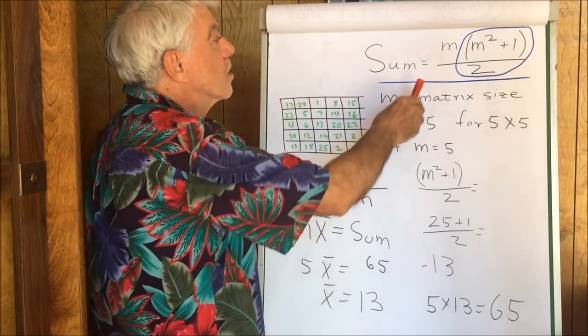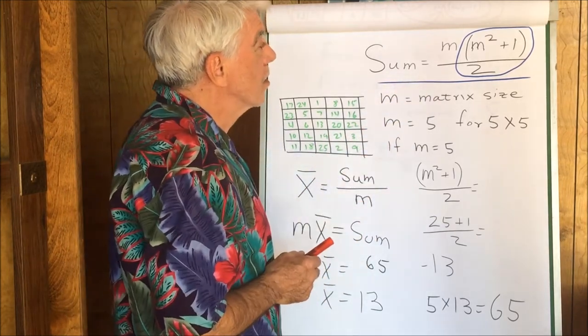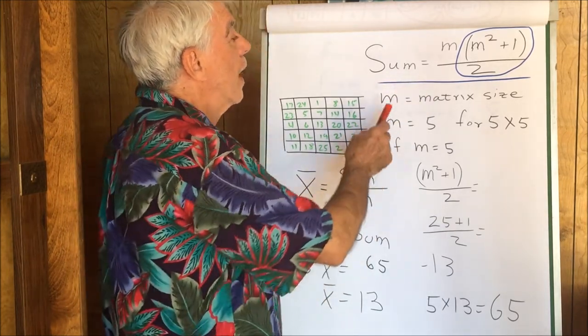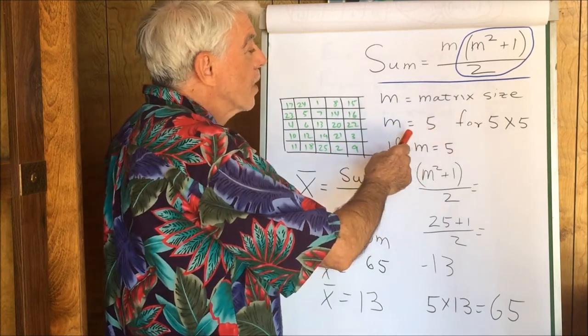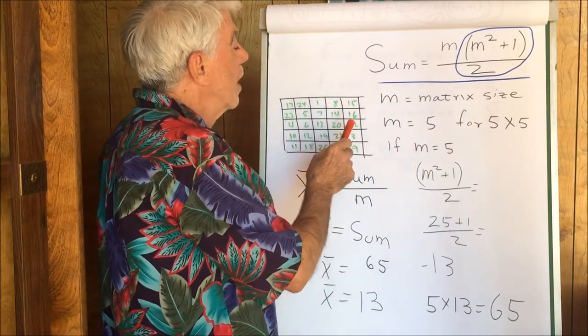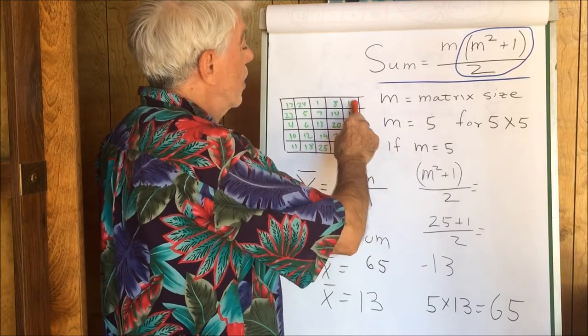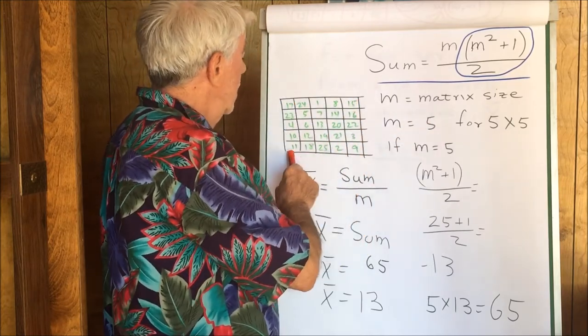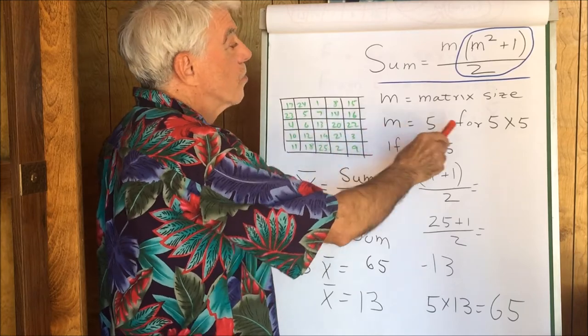Go back to this formula and discuss it a little bit. M is the matrix size. In this example here, M is 5: 1, 2, 3, 4, 5 columns and rows. 5 by 5.